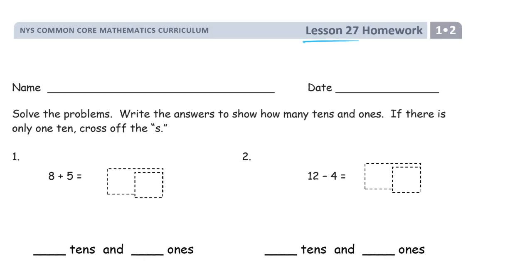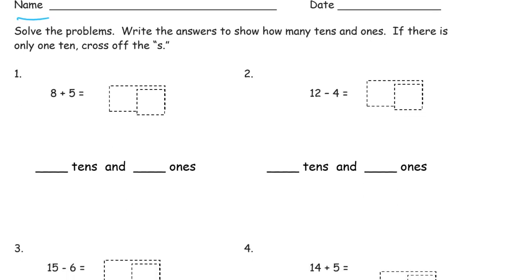Welcome to the homework for lesson 27. This is module 2 of grade 1. Write your name first. Do it now. You won't remember to do it later. It says solve the problems. Write the answers to show how many tens and ones. If there is only one 10, then cross off the S.